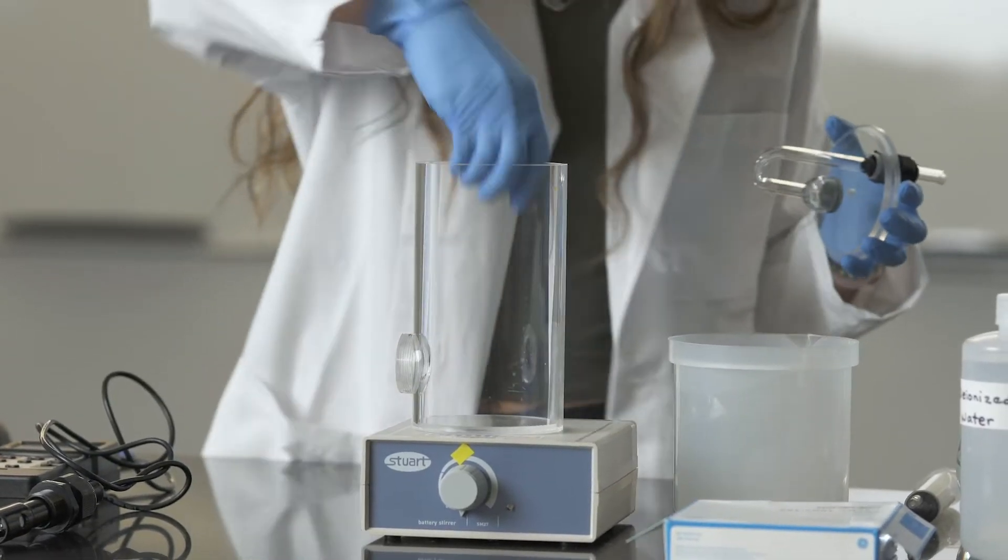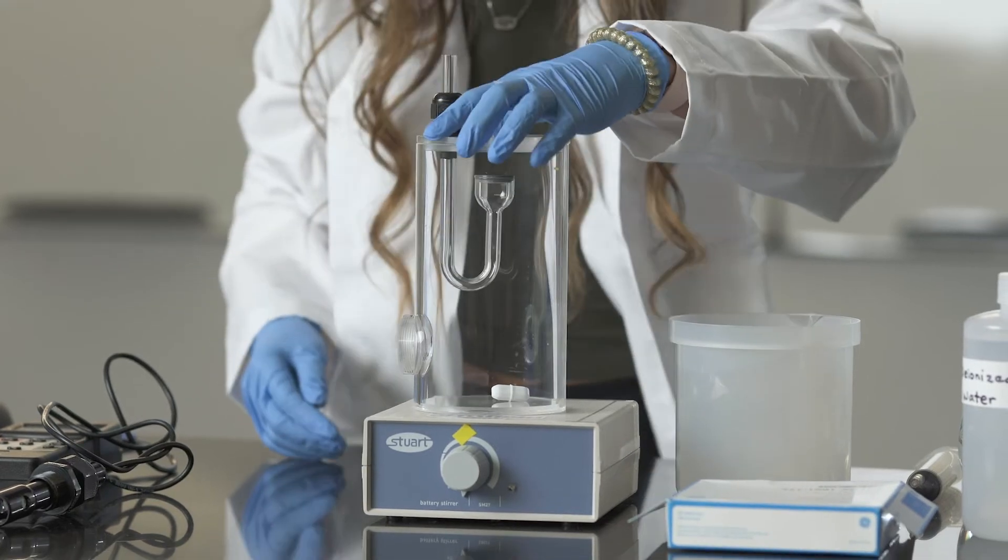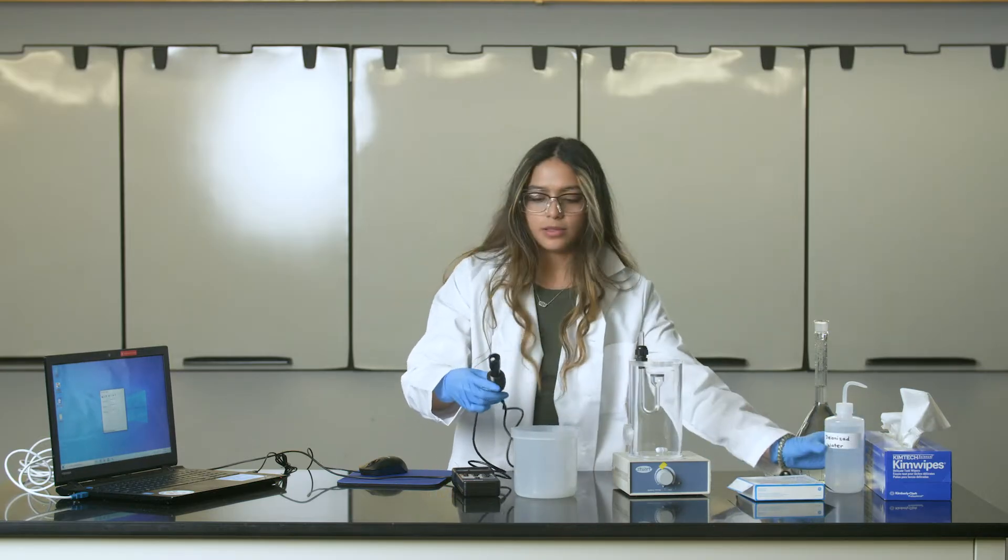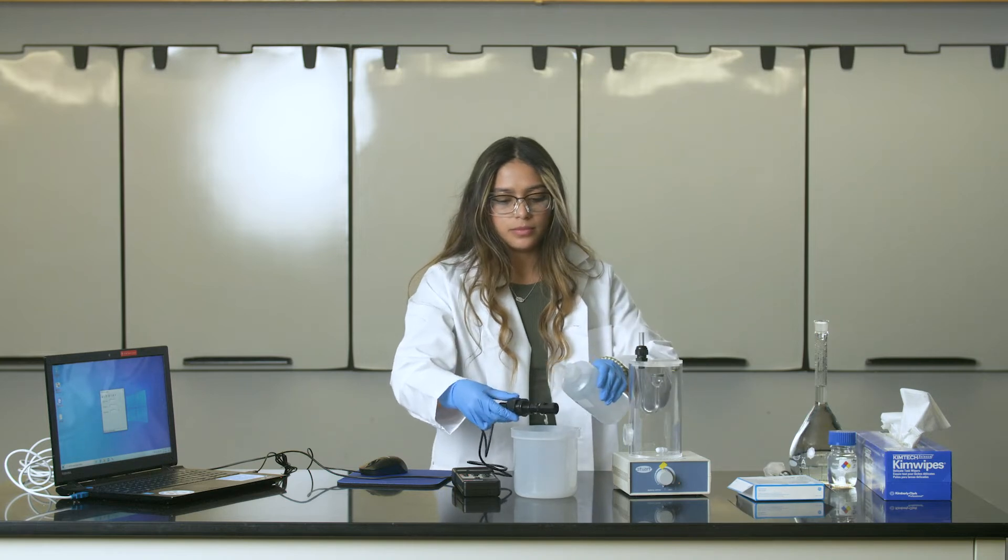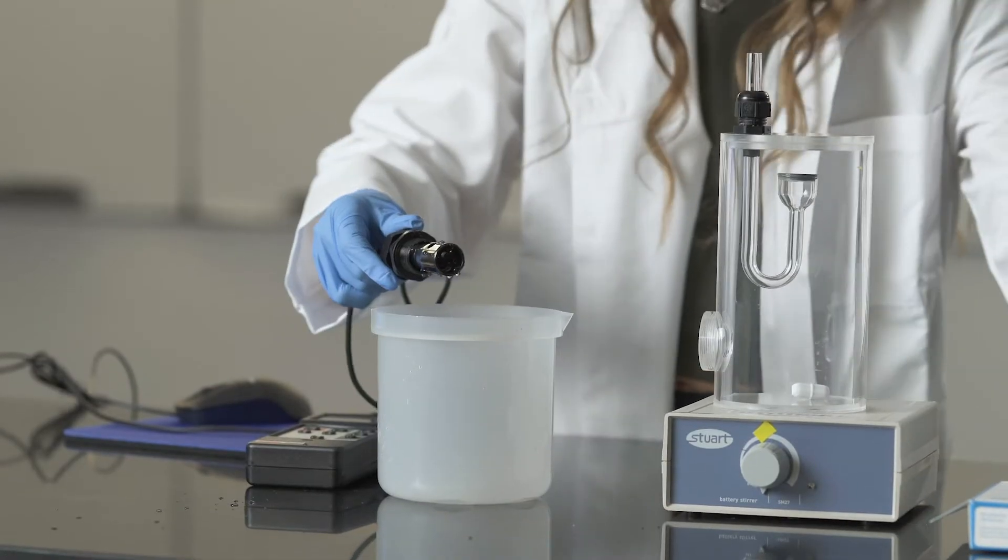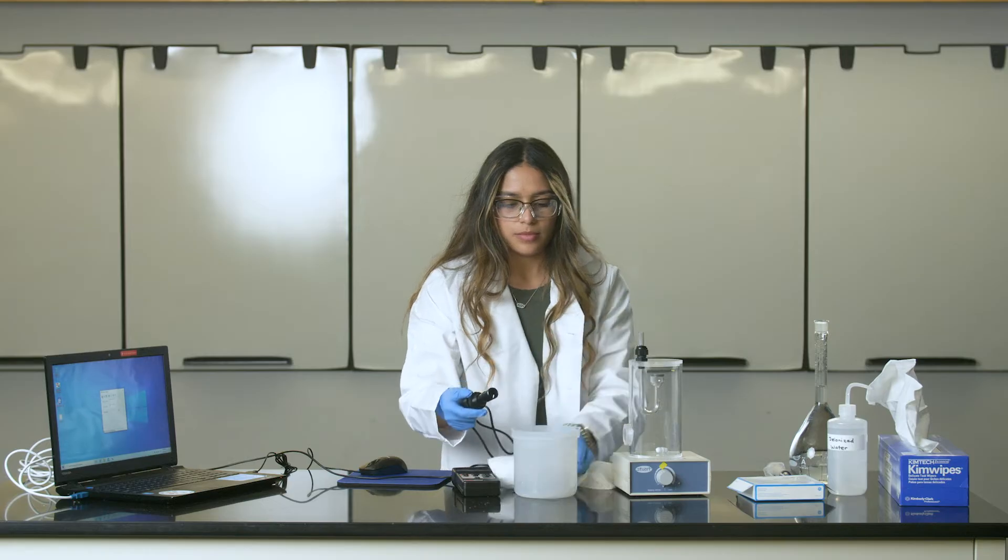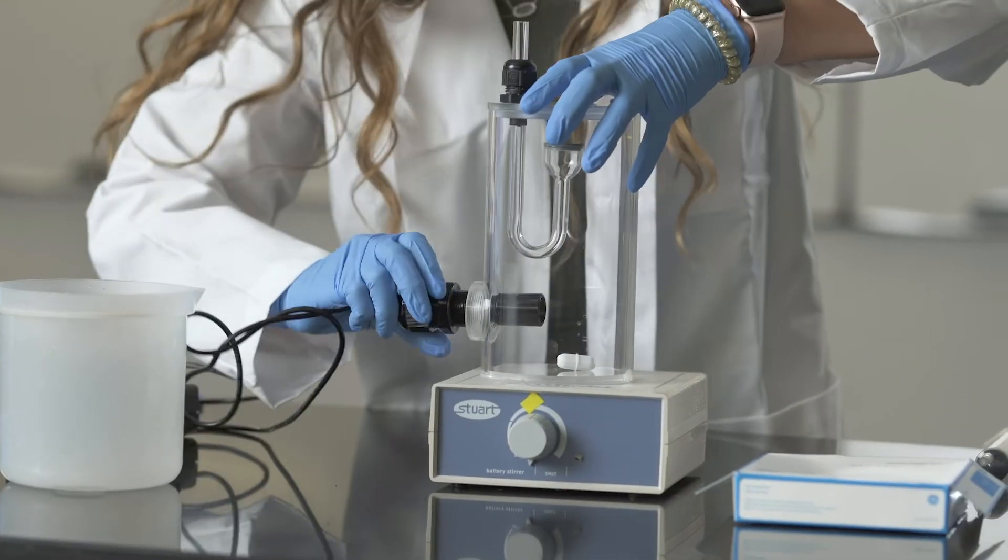Place the stirrer inside of the diffusion vessel and then rinse the electrode with pure water. After it's rinsed, dry with the kim wipe and secure it tightly inside of the vessel.